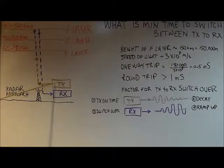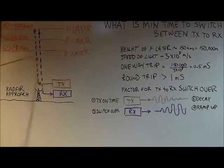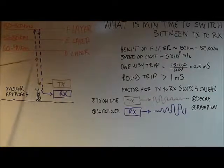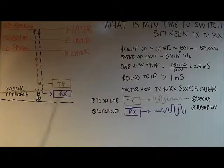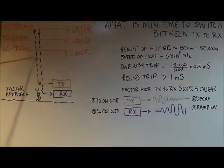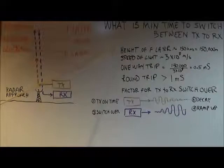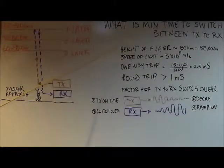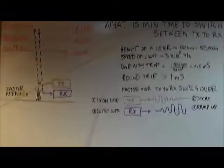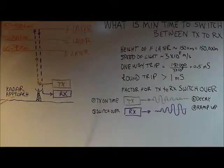I'll have my transmitter on, transmitting a signal, and at some point I have to turn the receiver on. During the upward journey I need to switch over to receive, but I don't know how long that takes. So one of the things I have to determine is the time budget — the minimum amount of time needed to switch over between transmit and receive.